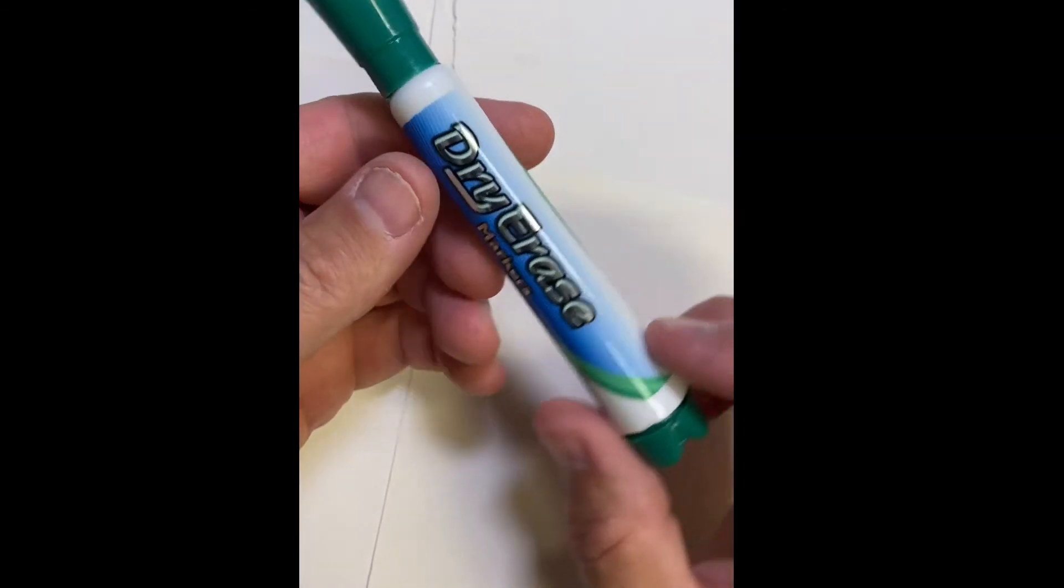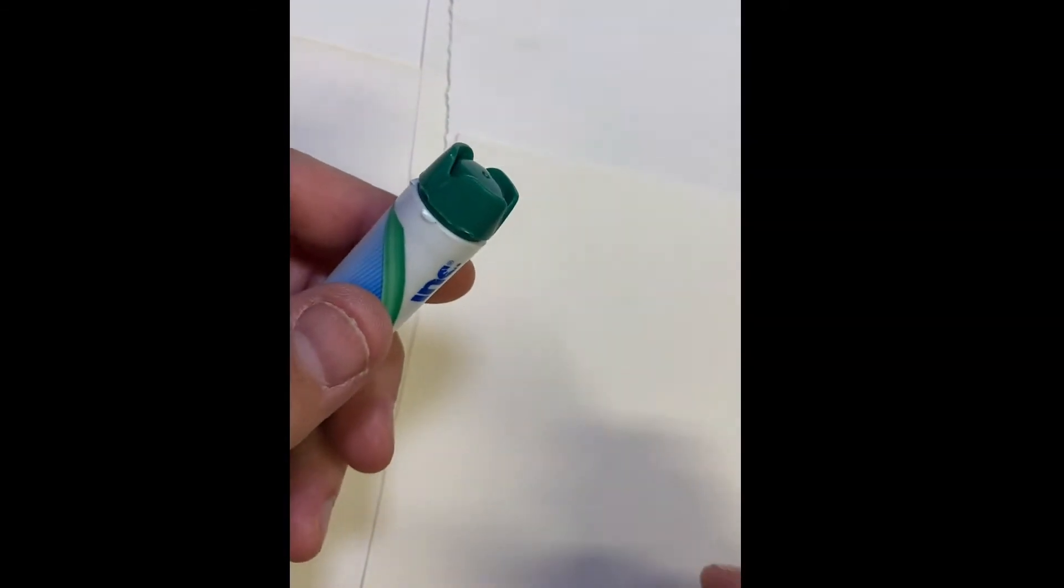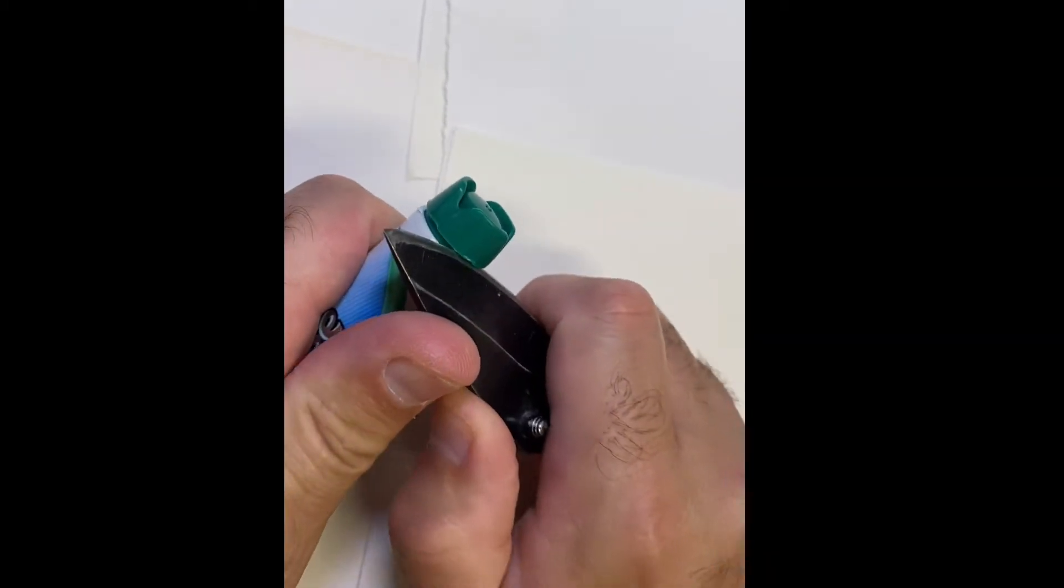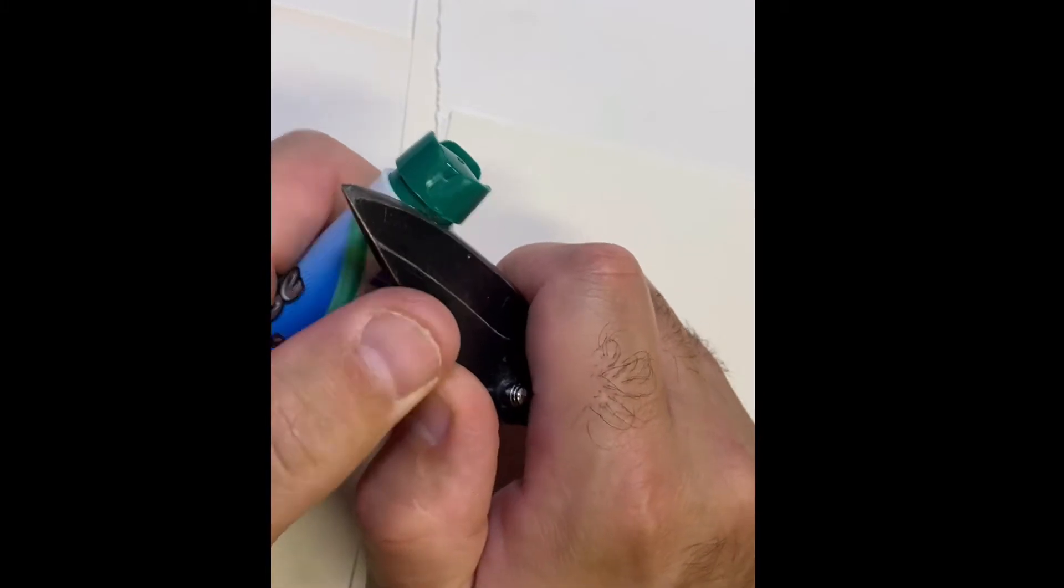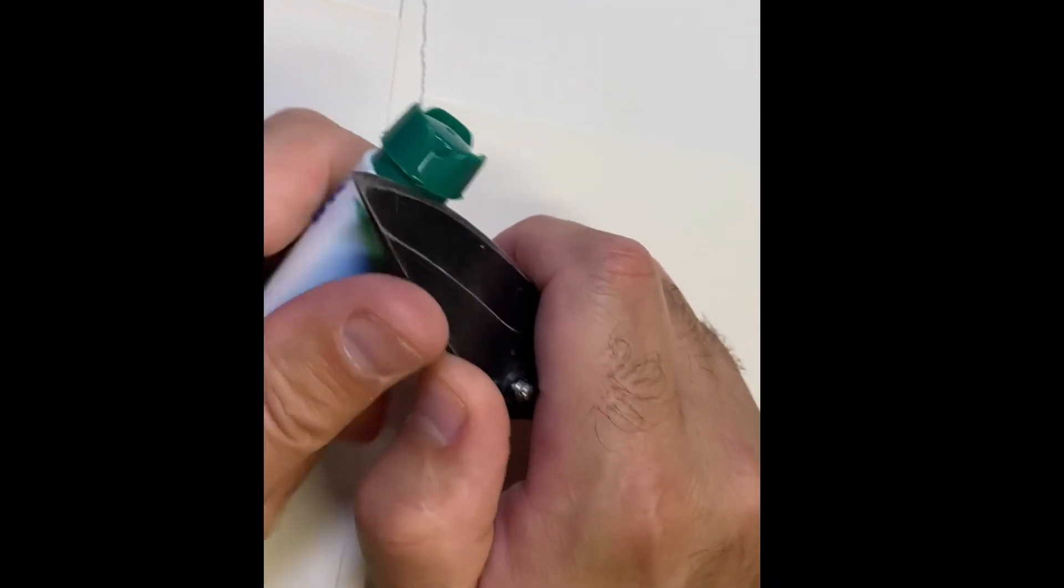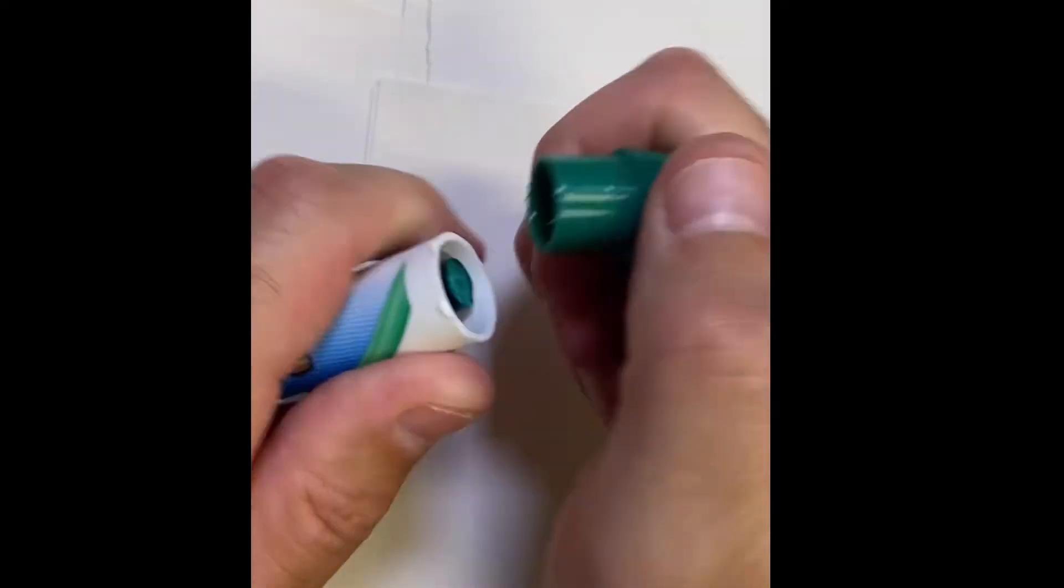All right, here we go. Here is this dry erase marker. We need to first get the backing off of this. Every one of these comes off kind of in a similar fashion, but some are easier than others. We're just going to pry off with this knife and we're really close there. It's already coming up. We're going to pull that off. There it is.